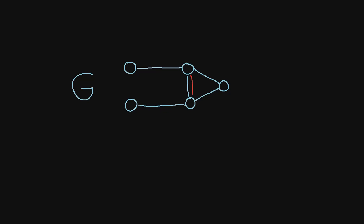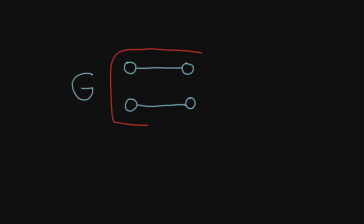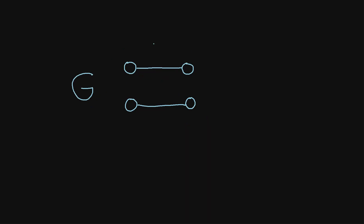Now imagine that we went ahead and removed this edge, and this edge, and this edge, and this vertex — imagine we removed all of these. This resulting graph right here is also a subgraph of the original graph G, because all of the vertices and all of the edges in this graph also belonged to the original graph G.